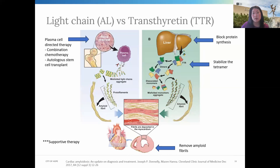For the TTR type, there are multiple areas where treatment can interrupt the process. There are the silencers, stabilizers, and fibril disruptors. The silencers are medications that block the protein synthesis so you don't even get the formation of the TTR proteins to begin with. The stabilizers are treatments that can help stabilize the TTR protein in the tetramer normal conformation, preventing them from dissociating into the monomers, which are the actual source for the amyloid fibrils. And then fibril disruptors, which look at actually removing the deposited amyloid proteins from the organs. There are certainly ongoing clinical trials looking at newer agents in all of these areas.